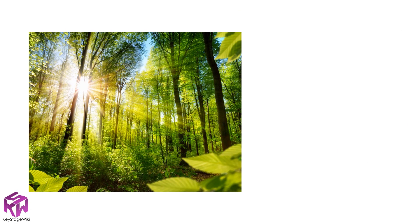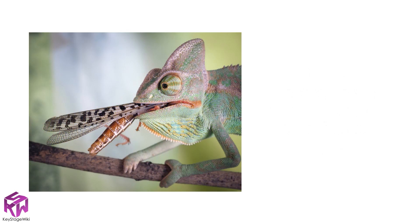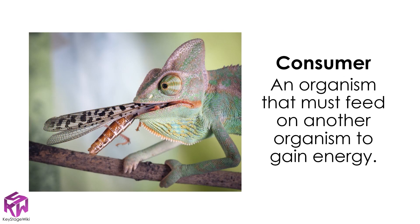The organisms that are able to absorb energy directly from the Sun are called producers — these are organisms that make their own food. If they're using light to do this, they use the process of photosynthesis. The organisms that cannot make their own food are called consumers; consumers are organisms that must feed on other organisms to gain that energy.